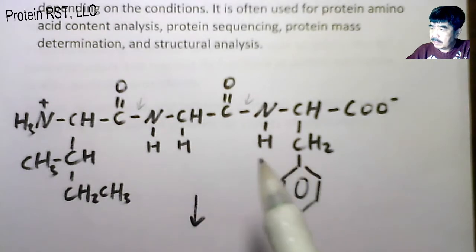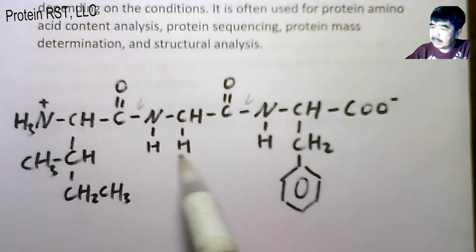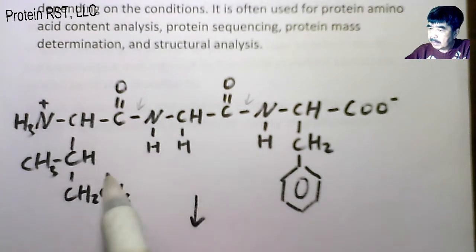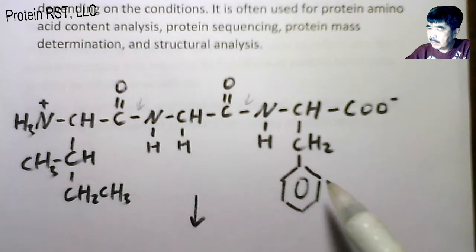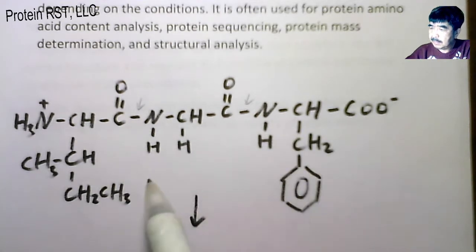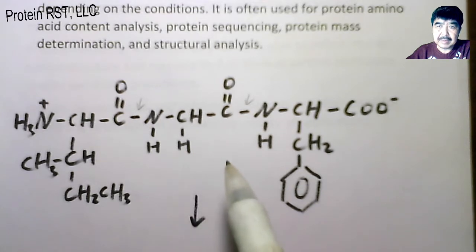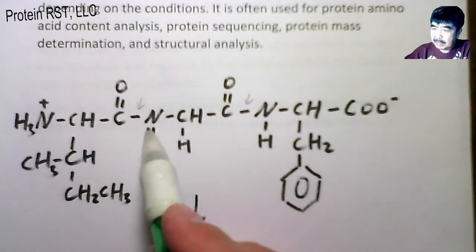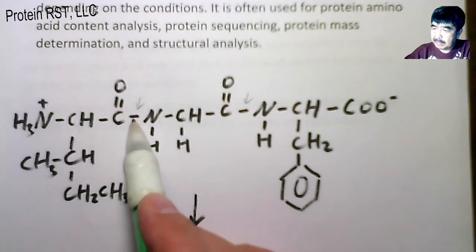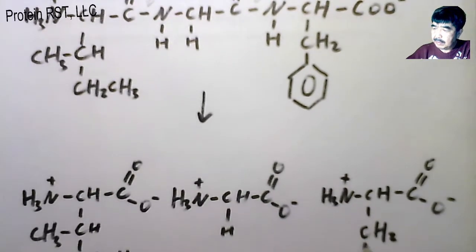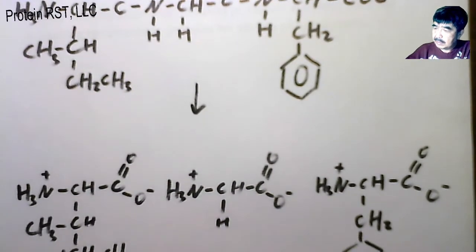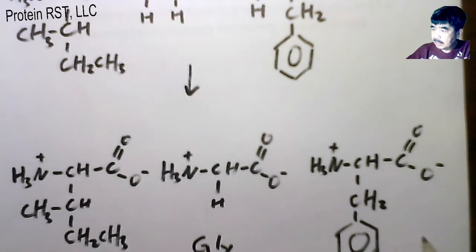This is a tripeptide - isoleucine, glycine, and phenylalanine. Three amino acid residues. They can be hydrolyzed at the peptide bond, the amide bond here, C-N bond, and form three amino acids: isoleucine, glycine, and phenylalanine.